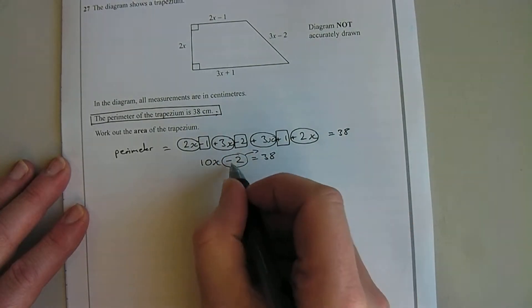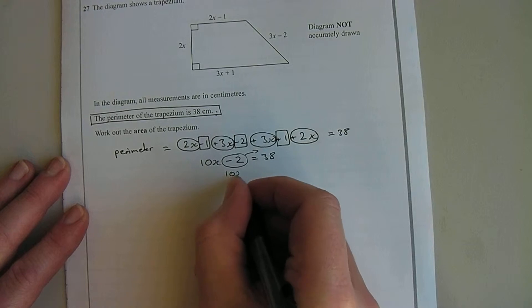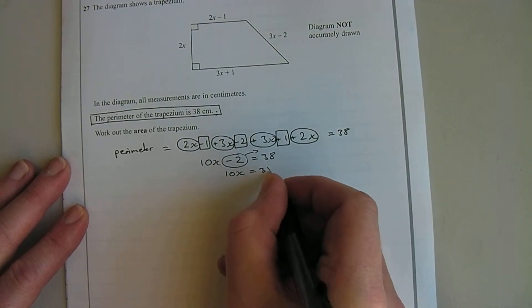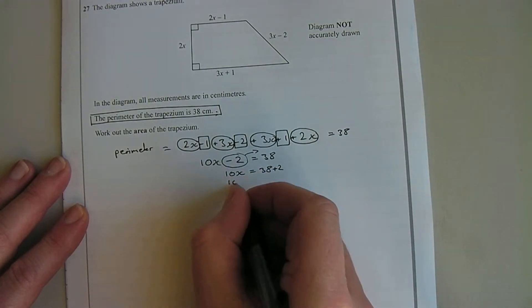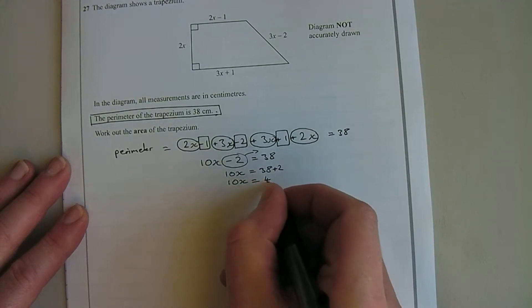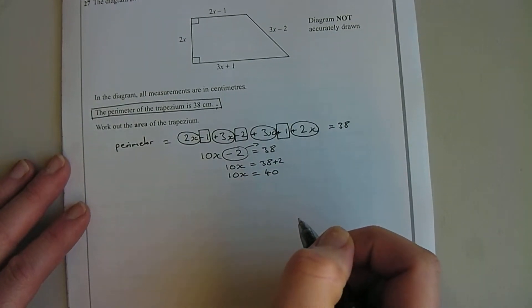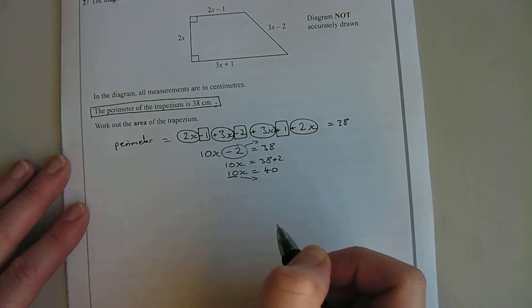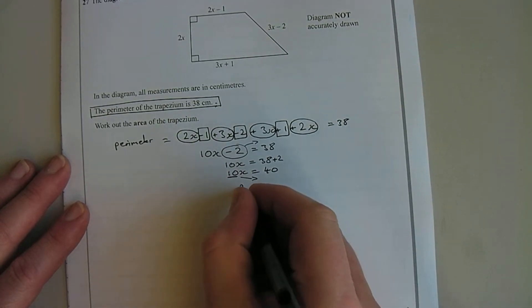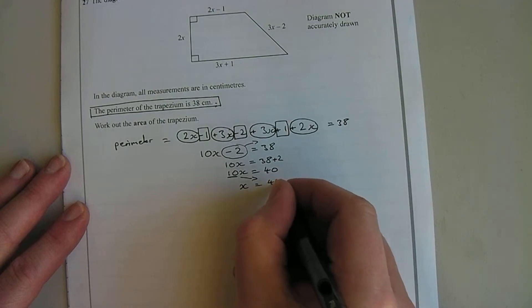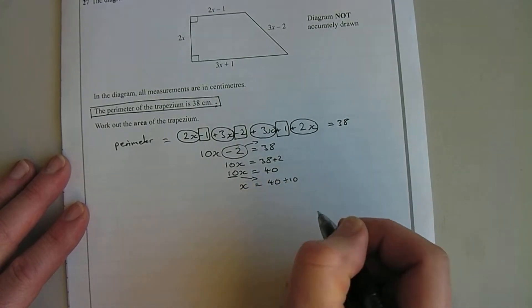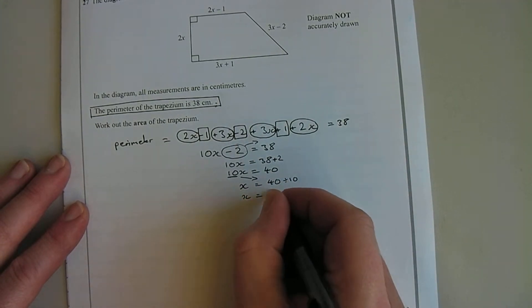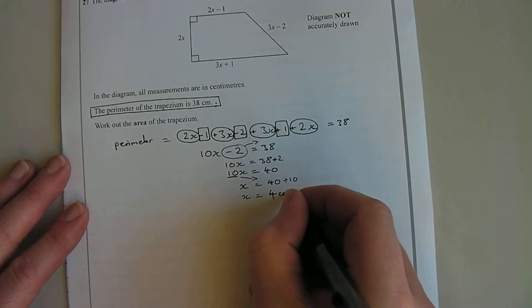10x equals 38 plus 2, so 10x equals 40. And then we can rearrange the equation by moving this 10 across so it comes over here becomes a divide, so x equals 40 divided by 10, so x equals 4. And we know it equals 4 centimeters because they've told us the units are in centimeters.